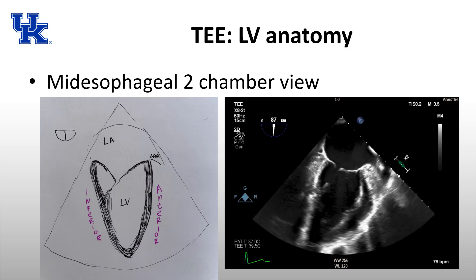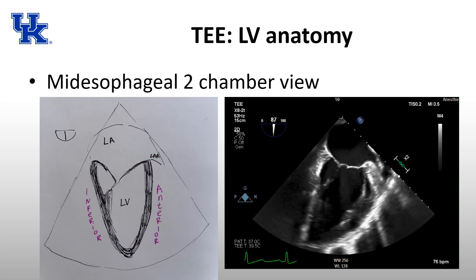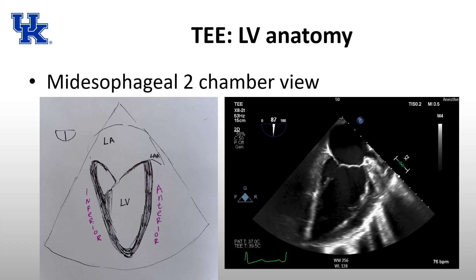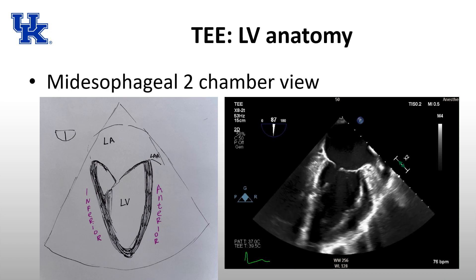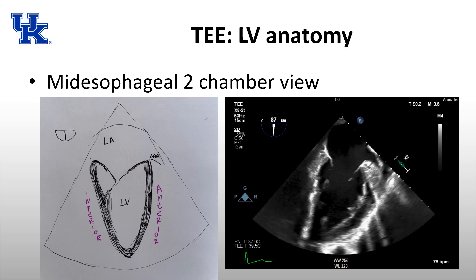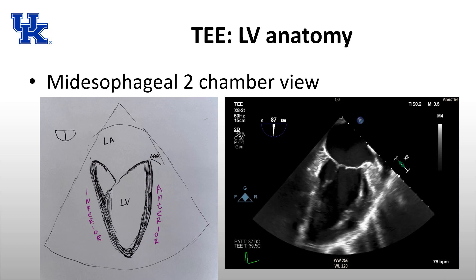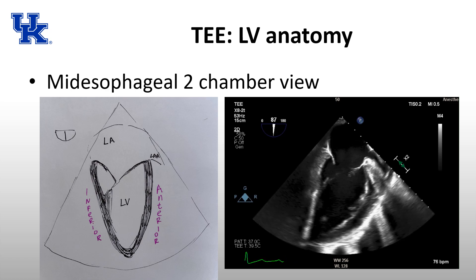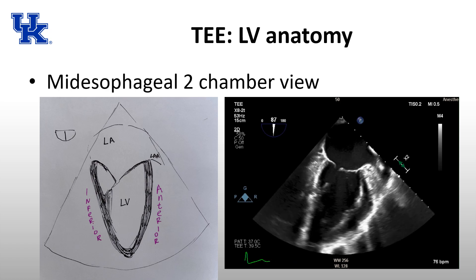The mid-esophageal two-chamber view is also good to know. Essentially you're cutting the heart straight through between the anterior and inferior walls. You won't see any right ventricle in this view — it's found at around 90 degrees, and you'll see the anterior wall and the inferior wall. An easy way to remember: the anterior wall is close to the left atrial appendage, which you can see on the upper right of the image, and the wall on the left side of the screen is the inferior wall.